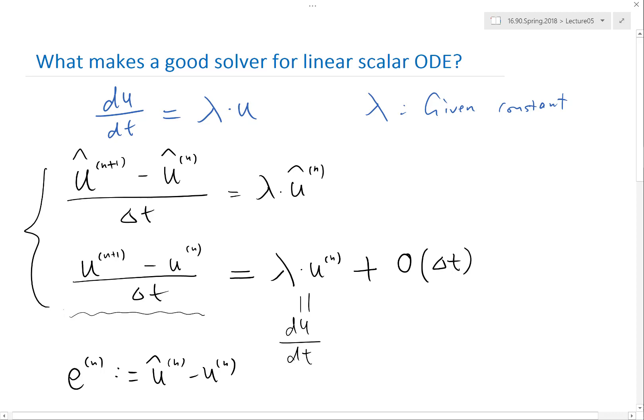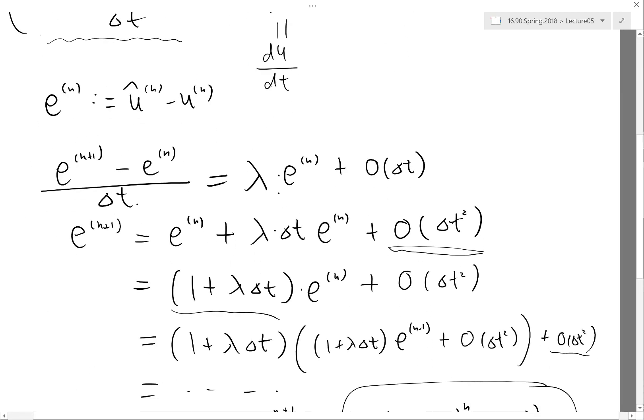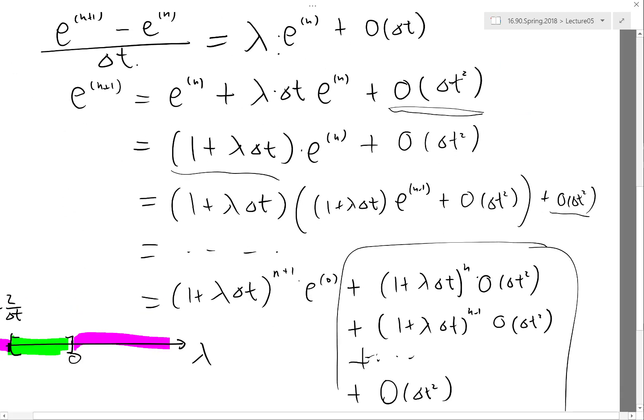Right. Okay, so your question is: when lambda is greater than zero, what does forward Euler do? It'll slowly diverge. And that's actually the behavior of the analytical equation, right? So even if you use the exact ODE solver, it'll slowly diverge if lambda is positive.